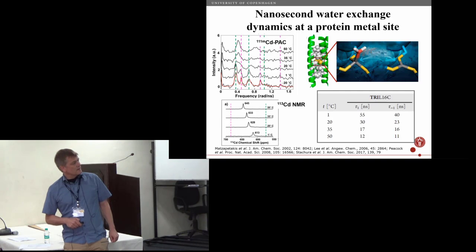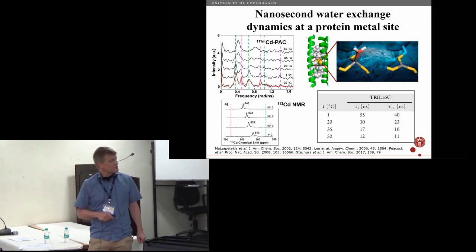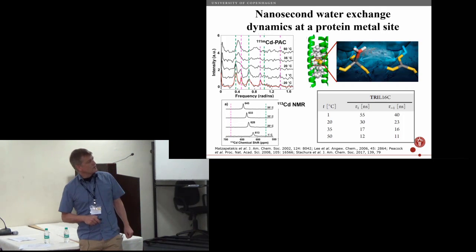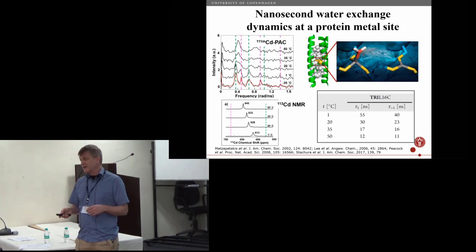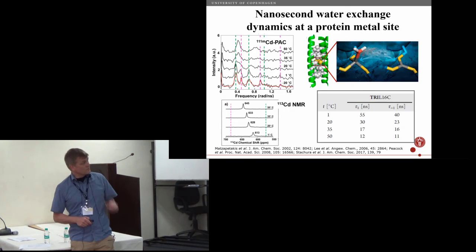We did PAC spectroscopy on these proteins, added cadmium to them, and if you look at the lower spectrum here, this is minus 20 degrees, you will see there are two NQIs present. One is given by the green dotted line here and the other by the red line, so they coexist in this protein. There are two structures that coexist. I will not give you all the details, but we have, I think quite unambiguously, determined these two structures.